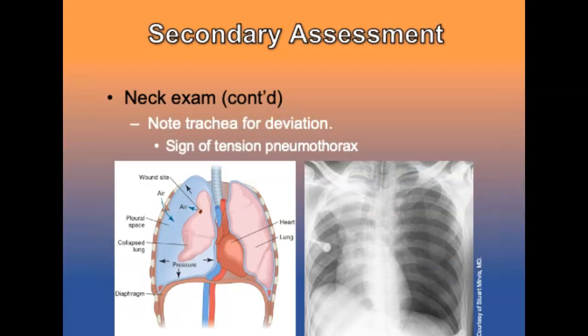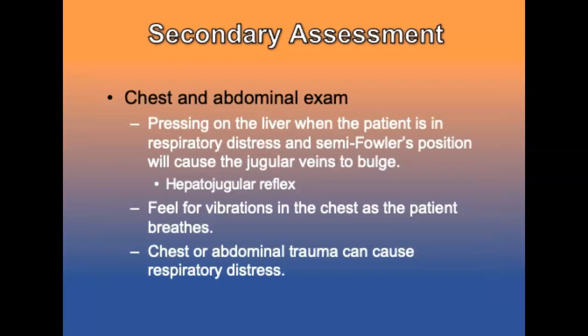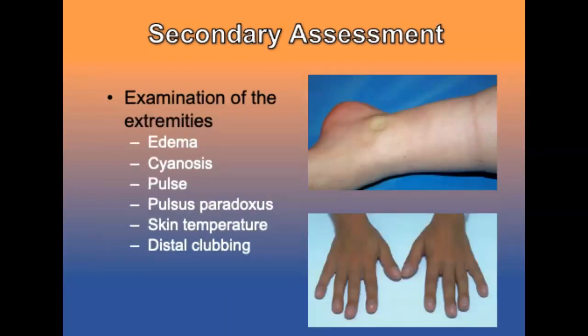Note the trachea for deviations — a sign of tension pneumo. Consider palpating the trachea at the substernal notch. During the chest and abdomen exam, the combination of jugular venous distension and hepatomegaly may indicate right-sided heart failure. Feel for vibrations in the chest as the patient breathes. Examine the extremities: note edema of the ankles or lower back, check for peripheral cyanosis, check the pulse for signs of profound tachycardia, note any pulsus paradoxus, check skin temperature, and note any distal clubbing from chronic hypoxia.